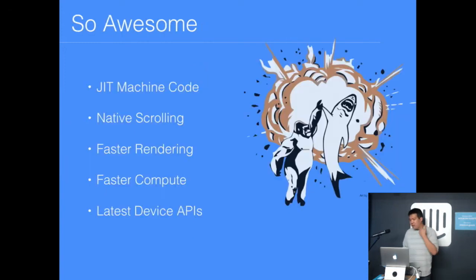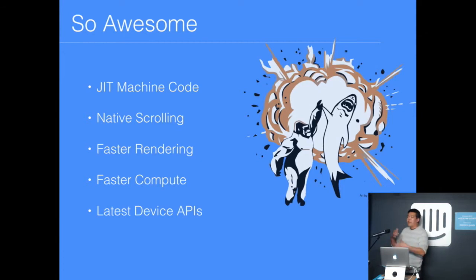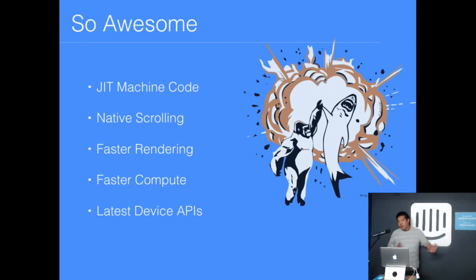Why is this important? When we come to Squirrelfish and V8, the JavaScript compiler is now a bytecode compiler. At runtime, your JavaScript is being compiled down into machine code and executed just-in-time. Not only does this mean it executes much faster, but the runtime can also do much better static analysis of your code to optimize execution. We also get additional features such as access to native scrolling — important because hybrid apps historically had issues with emulated JavaScript scrolling that could be quite janky — as well as faster rendering, faster compute, and access to the latest device APIs.